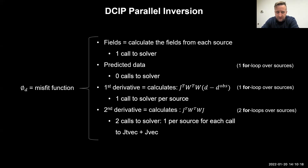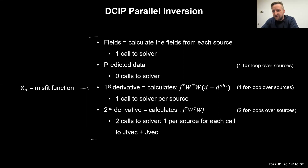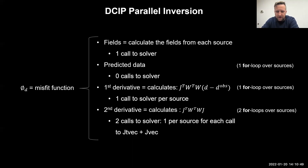For the second derivatives, SimPEG again uses the implicit form to calculate J times a vector. In the second derivative, we need to make calls to both J times vector and J-transpose times vector, so now we have two for loops to deal with. Every iteration of those for loops requires a solver call. Storing the factorizations helps, but it is still a time-consuming computational cost.